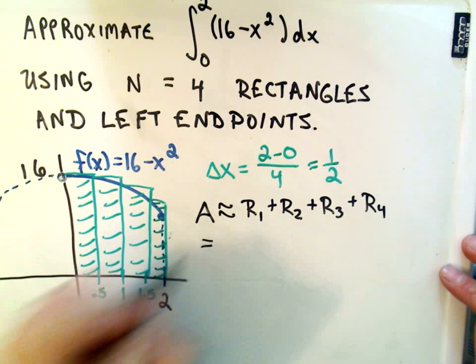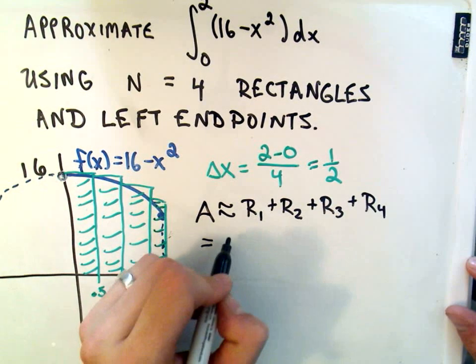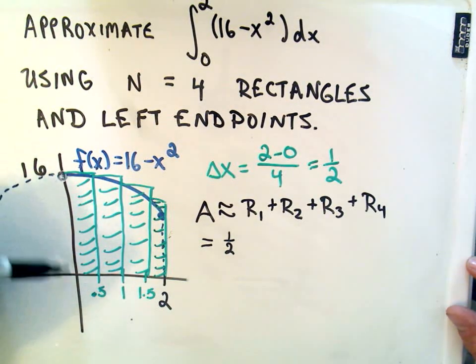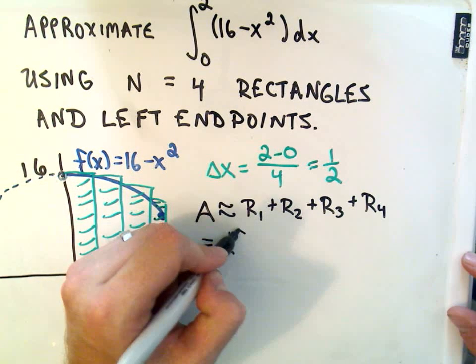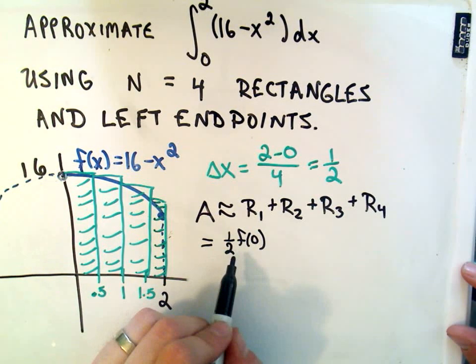So to calculate the first rectangle, the area of it, we know that it has a width of 1.5. To get the height, the height corresponds to the y-coordinate. We're using the left endpoint. So we need to plug the x-coordinate of 0 into our function. And that'll give us the area of the first rectangle.